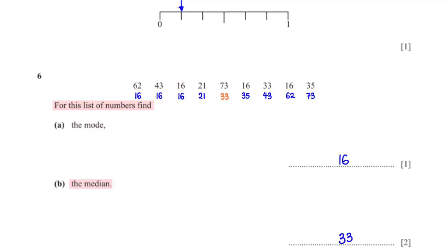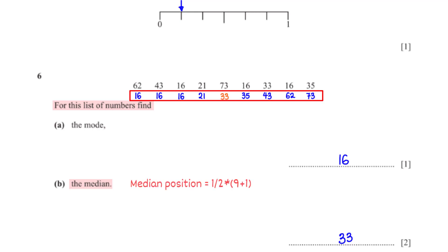Find the median. The median is the middle number. To get the median, we first need to rearrange the numbers in ascending order. The total number of numbers in the list is 9. So to get the position of the median, we find half of n plus 1, where n is 9. This gives us 5. The number in the fifth position is 33.